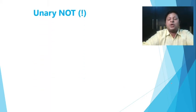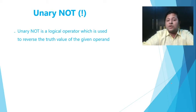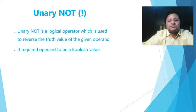Let's move on to next unary NOT, which we have already seen in logical operators. So it's one of the logical operators which is used to reverse the truth value of the given operand. So if the operand, which has to be a Boolean value, so you can see it requires an operand which is to be a Boolean value. So if the operand, let's say the truth value of the operand is true, it makes it false. And if it is false, it makes it true.